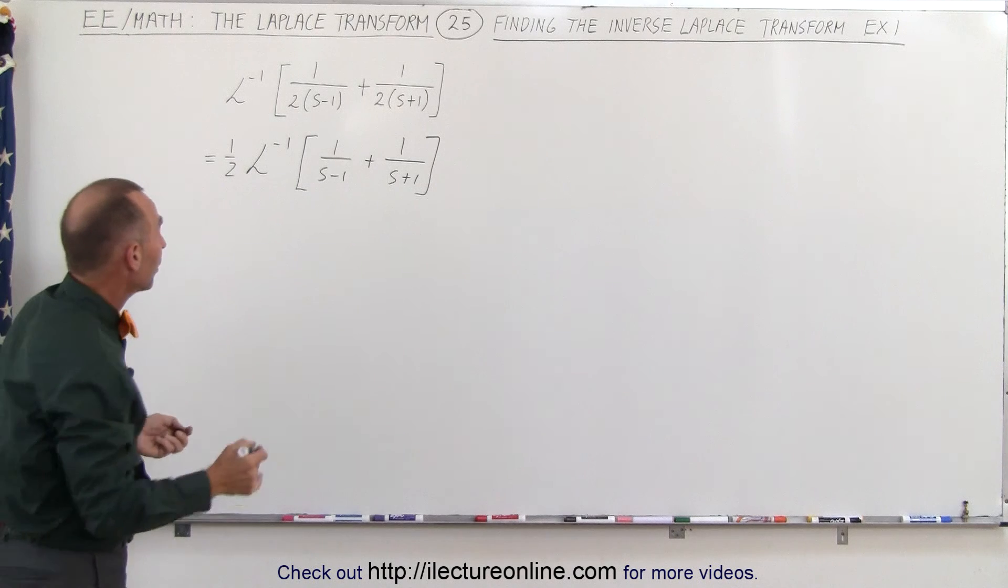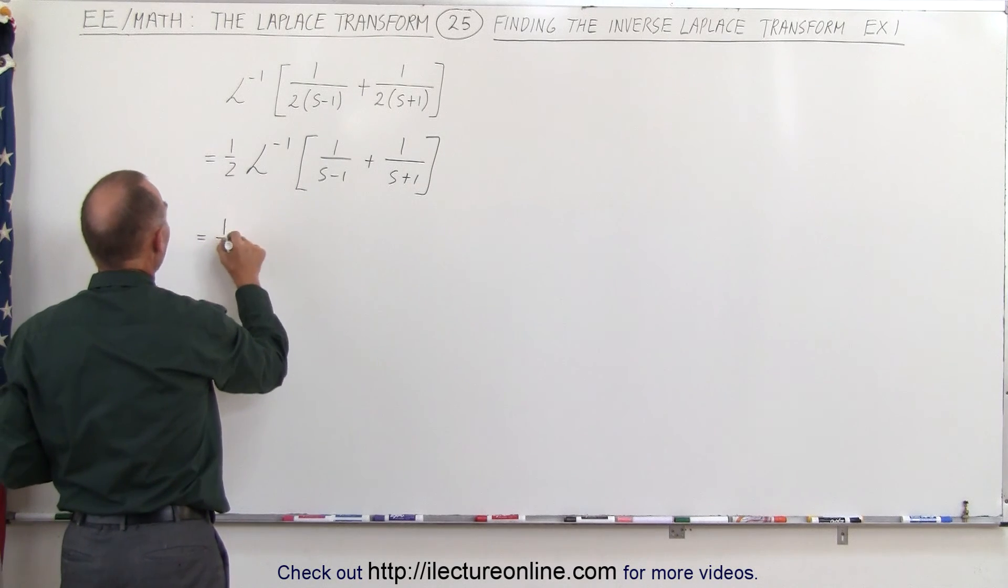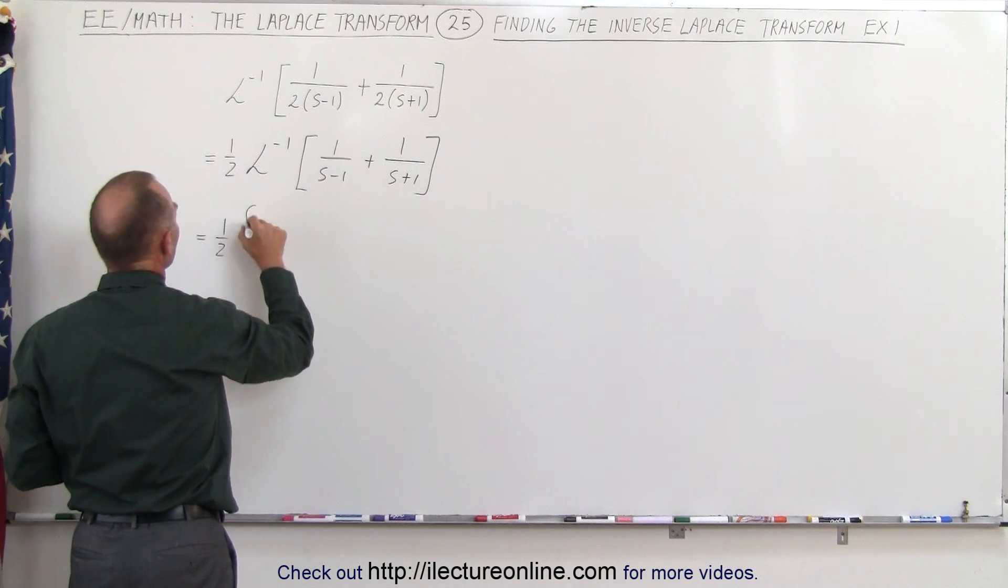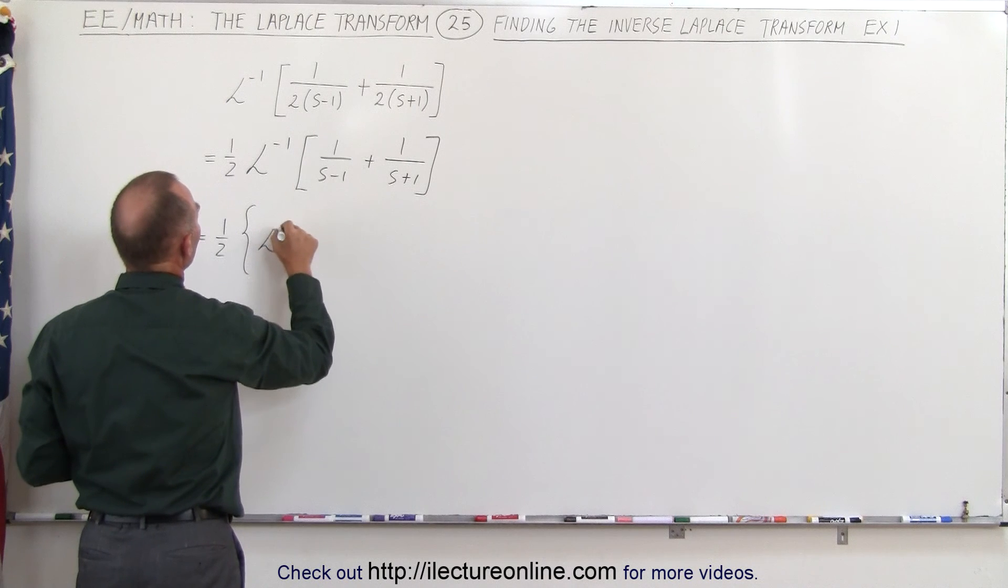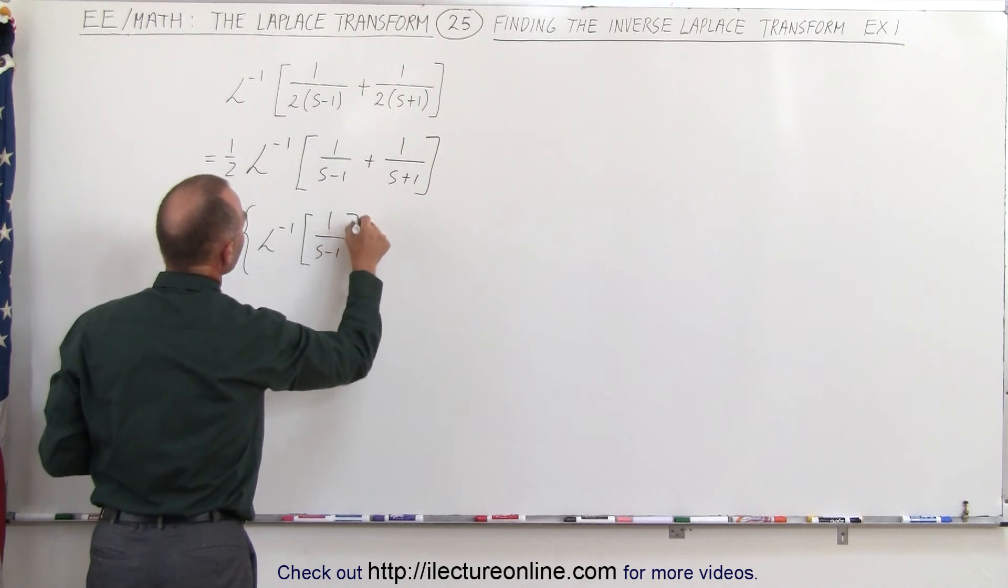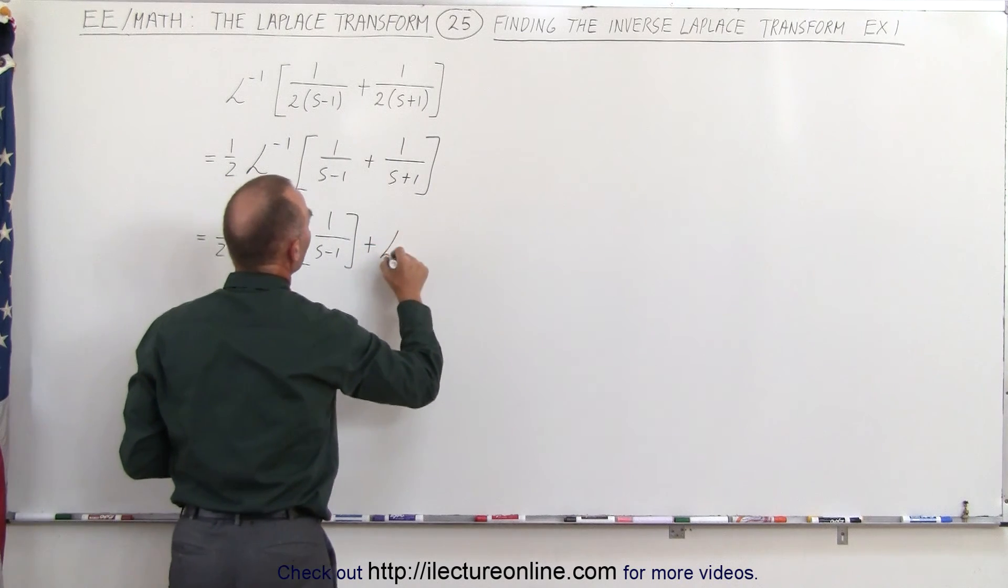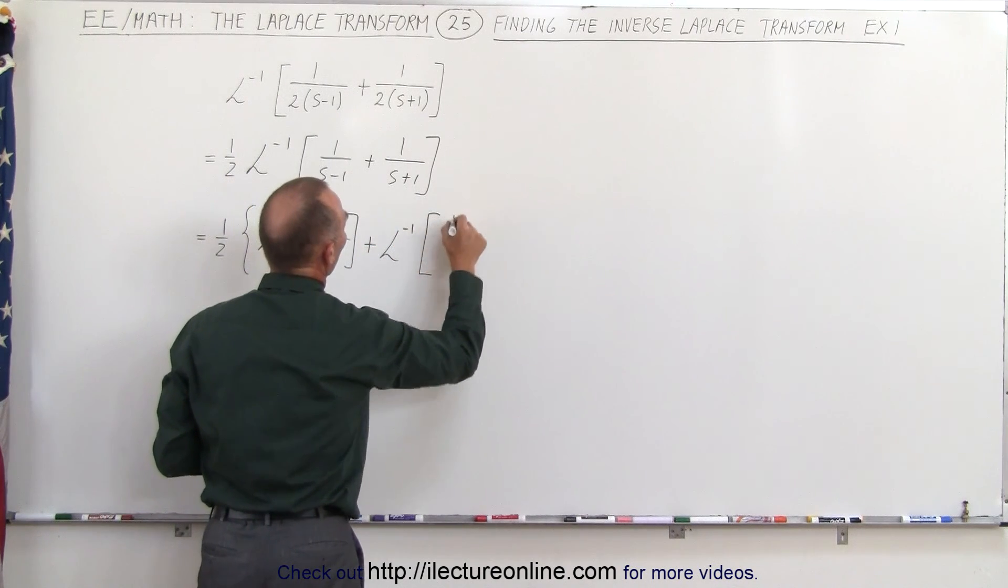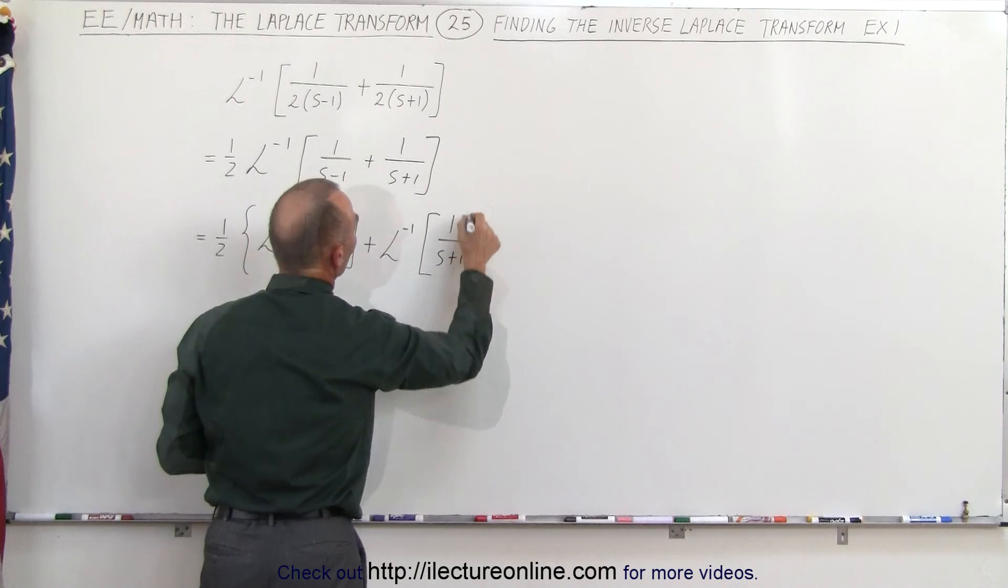And that can then be written as follows. This can be written as 1 half times, let me put parentheses here, the Laplace transform of 1 over s minus 1 plus the Laplace transform of 1 over s plus 1.